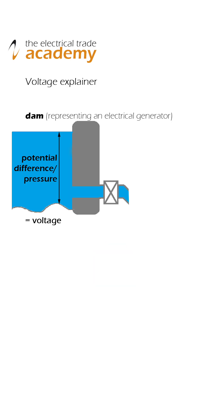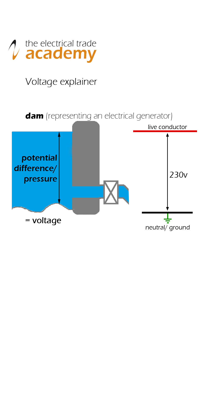Think of voltage as a dam of water, where the dam represents an electrical generator. Its weight and volume has a certain potential to force water through a pipe, and it naturally sits there as a constant potential pressure. Like the water pressure difference between the top and the bottom of the dam, voltage is also known as potential difference — because there's a higher potential on a live conductor relative to neutral and ground, which is at zero potential.